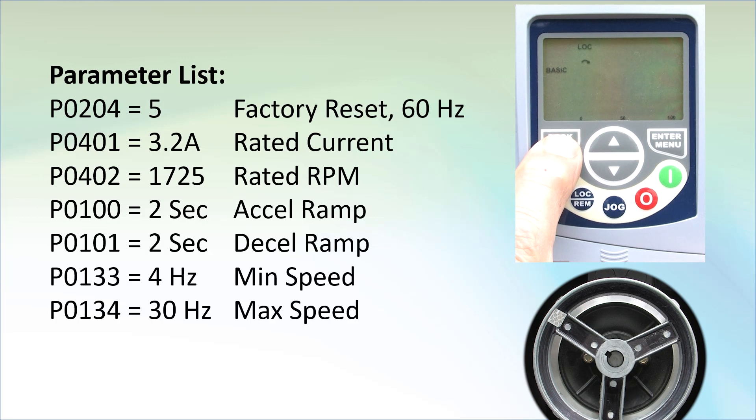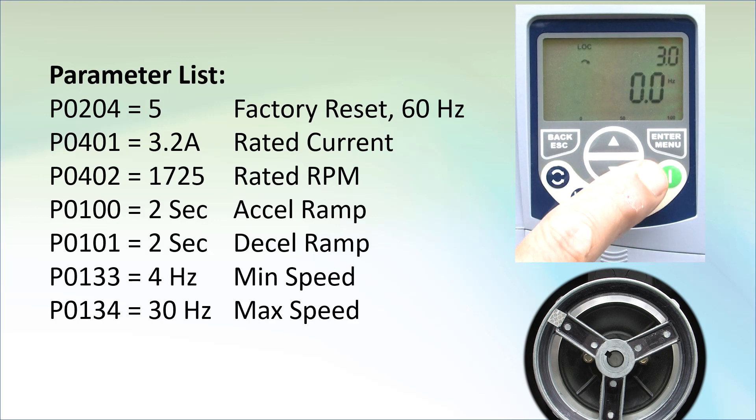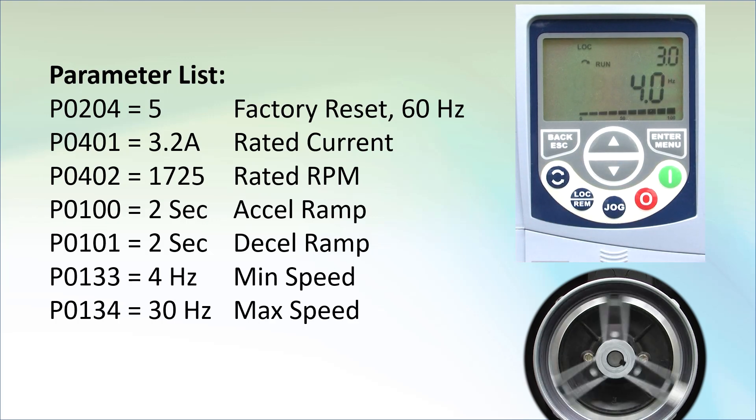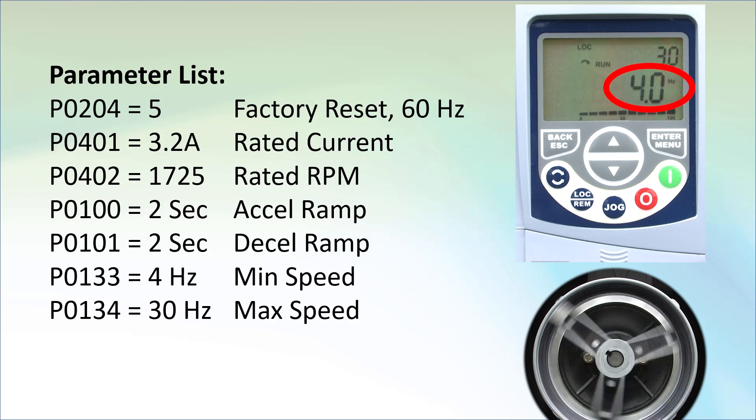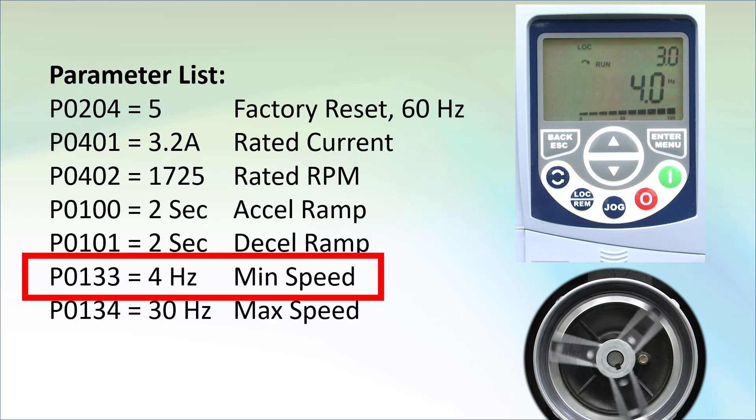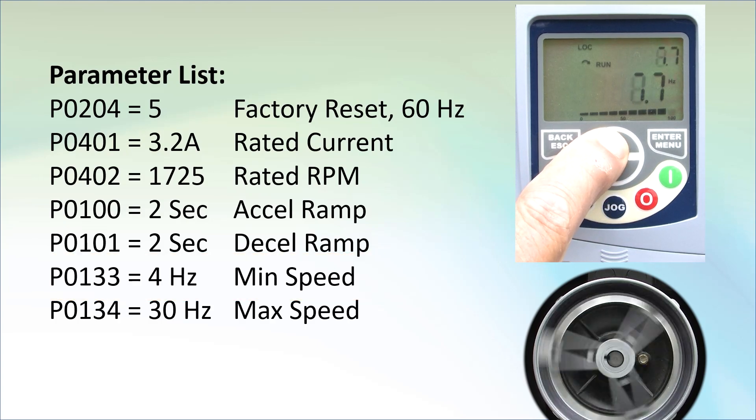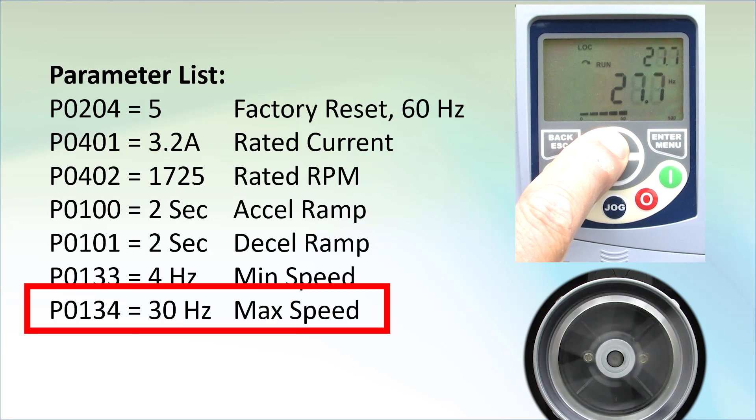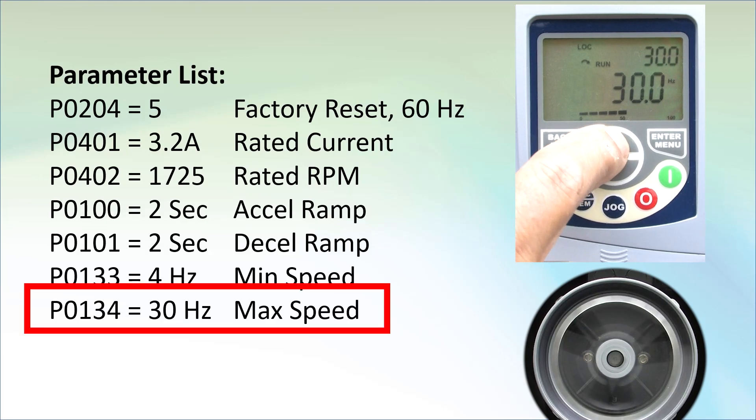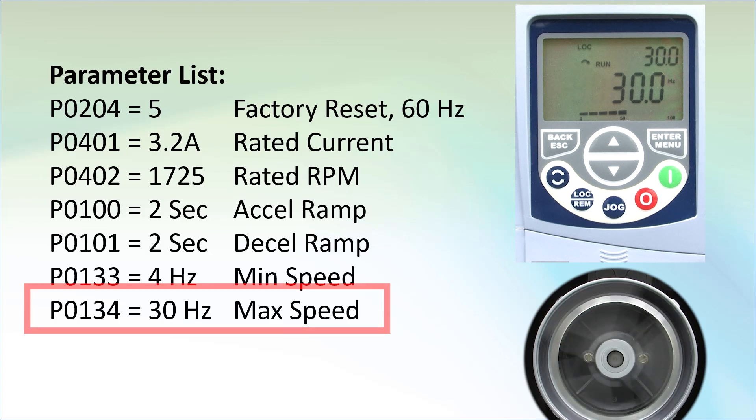Press escape twice to get back up to the top level. Hit the run key and sure enough the drive ramps the motor to the 4 hertz minimum output frequency we just entered. Perfect. If I press the up arrow to increase the output frequency, then the motor responds accordingly. Of course since we set the max frequency to 30 hertz, the drive won't let us go past that. Exactly what we expect.